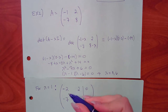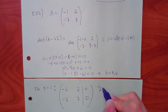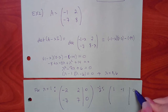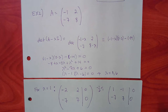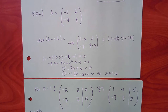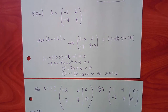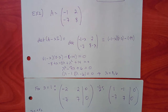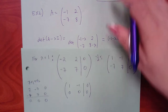Multiply row 1 by negative one-half to get a leading 1. Then 7 times row 1 plus row 2 — we get 7, negative 7, 0 and negative 7, 7, 0 — which gives all zeros. This happens often but not always.